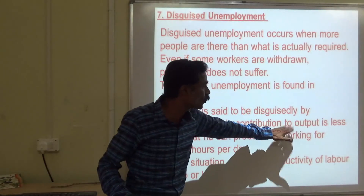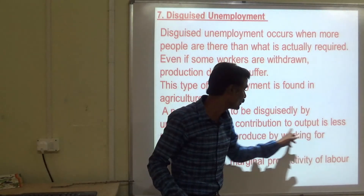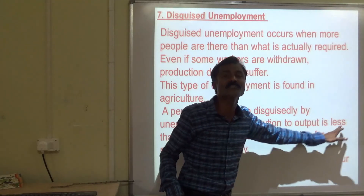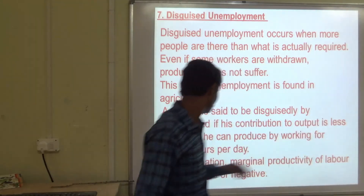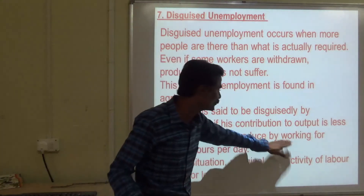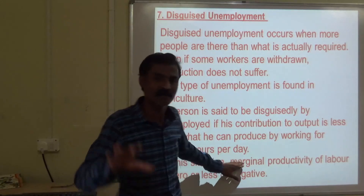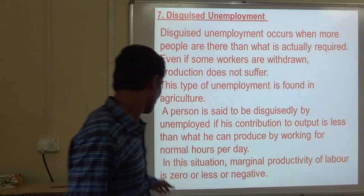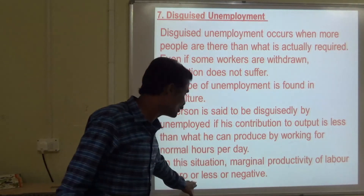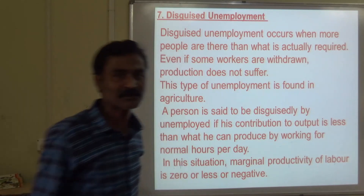The key characteristic of disguised unemployment: contribution to output is zero. People are working normal hours per day, but in this situation the marginal productivity of labor is zero or negative — that means the person's productive contribution is either zero or negative.